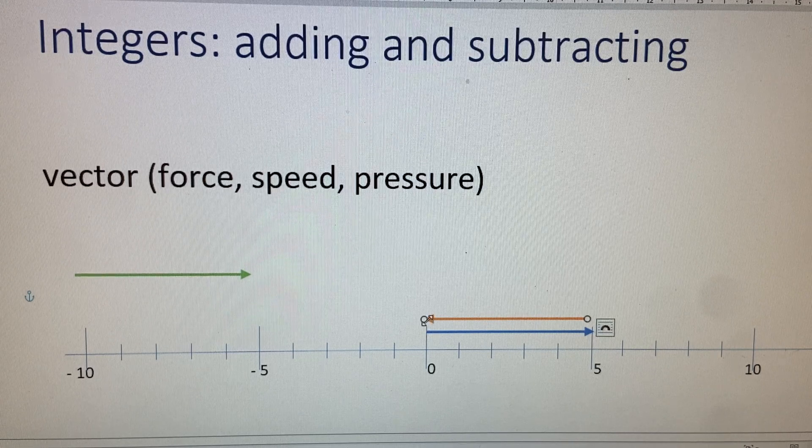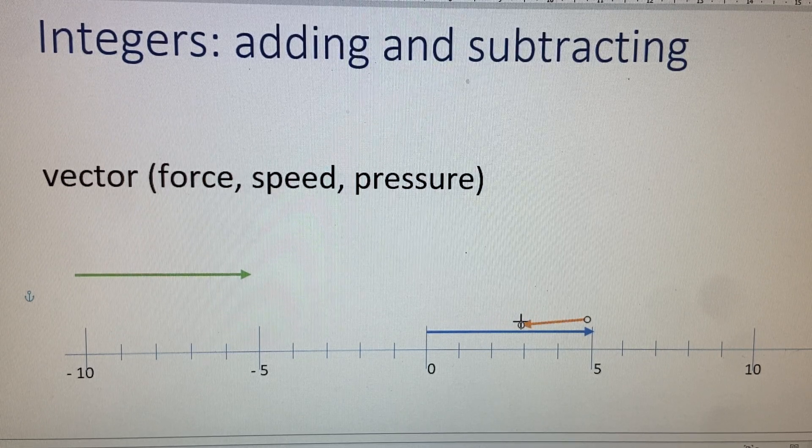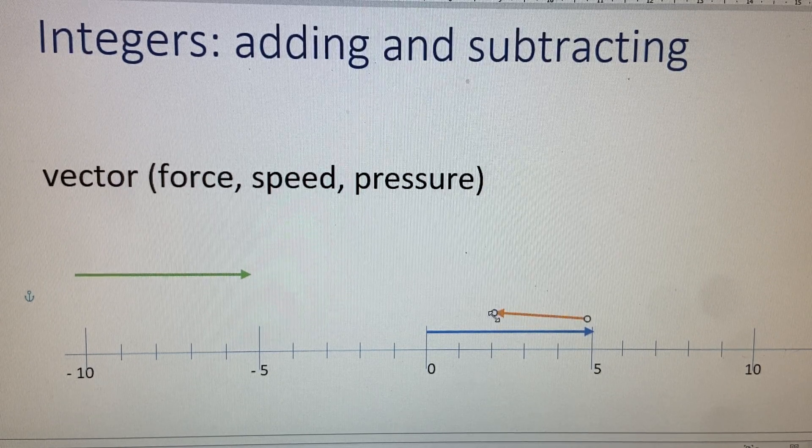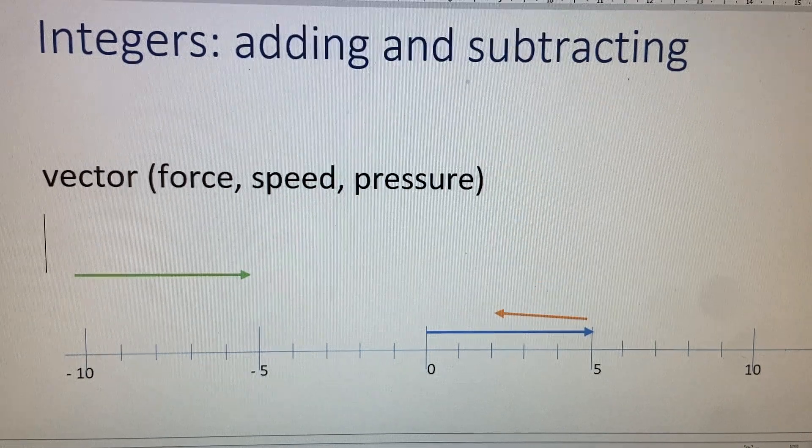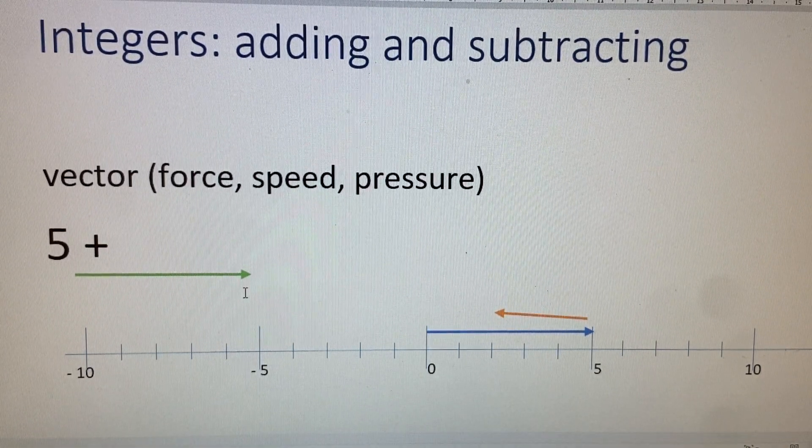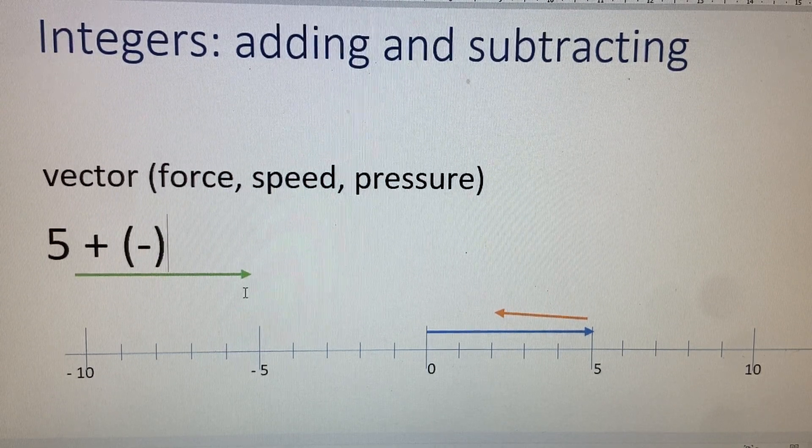Vectors don't have to be the same length. They do have to be pointing in the same direction. So if this one is positive five, the blue arrow, and to this I'm adding negative three, but I'm gonna put that negative three in a bracket.